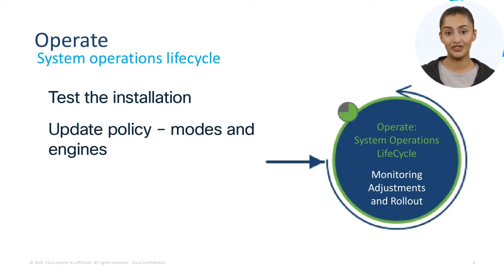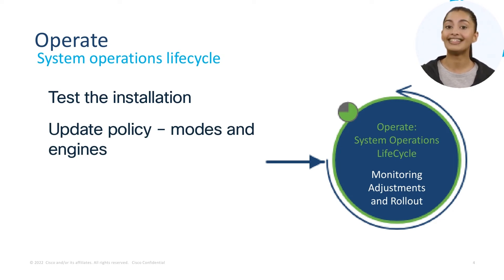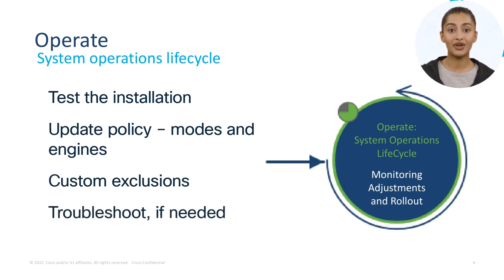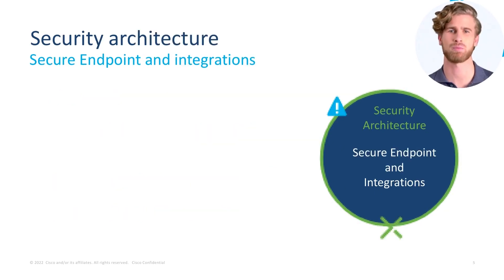Do not shy away from updating the policies, since this may have an impact on the success of the deployment process. As an admin, you can continue to monitor the rollout and add custom exclusions. Since we're still testing the installation at this point, we should also be focusing on optimizing the performance, which may require some additional troubleshooting. Once we get past the operate stage, we can look at Secure Endpoint in the bigger picture, such as how you can blend it into your existing security architecture.